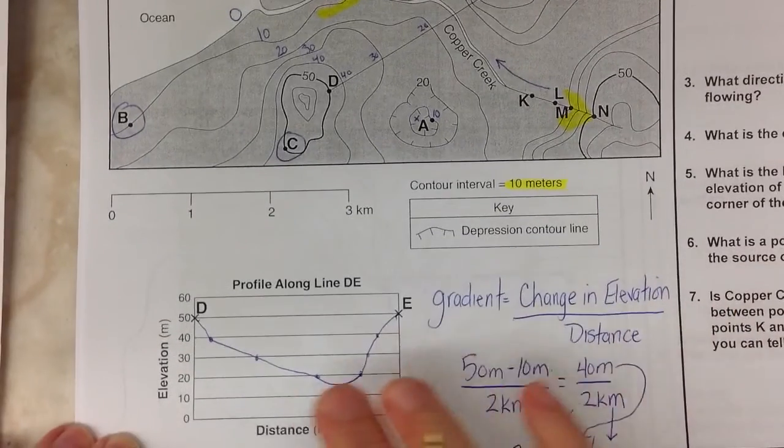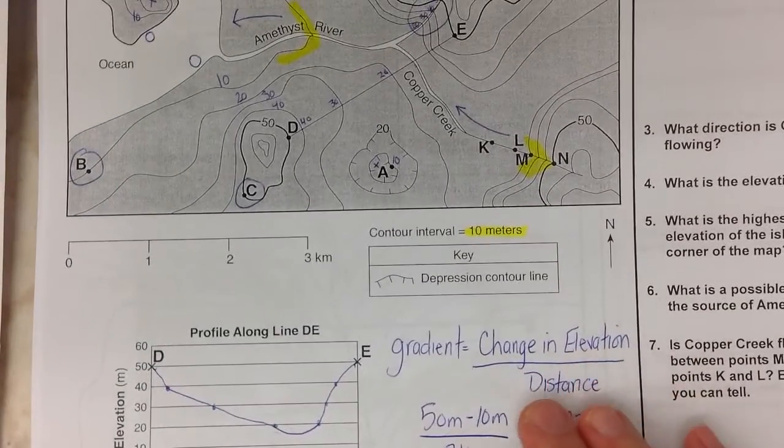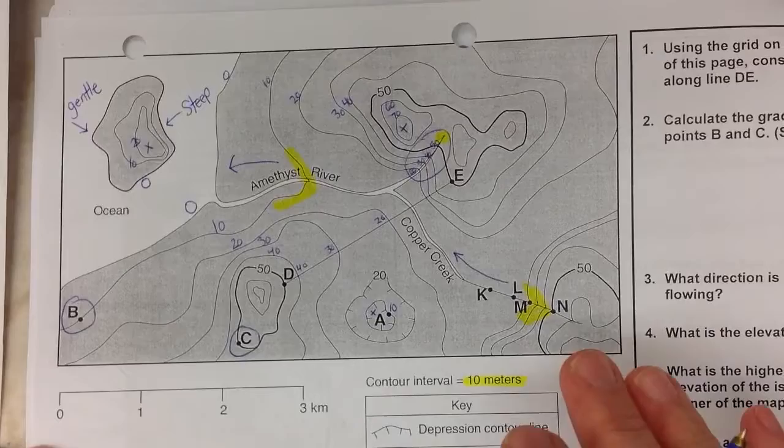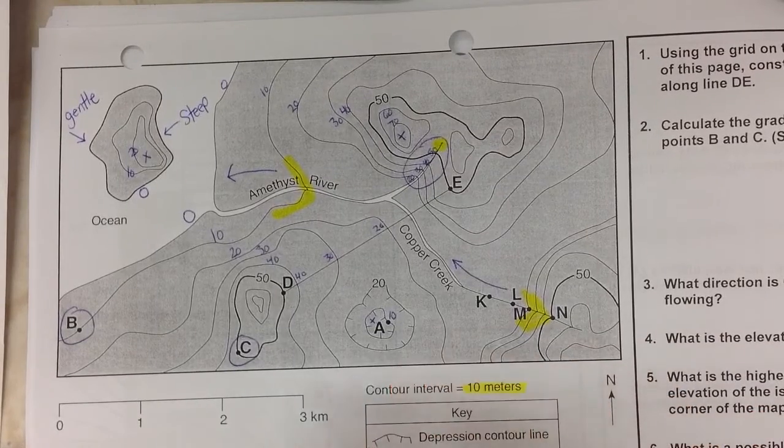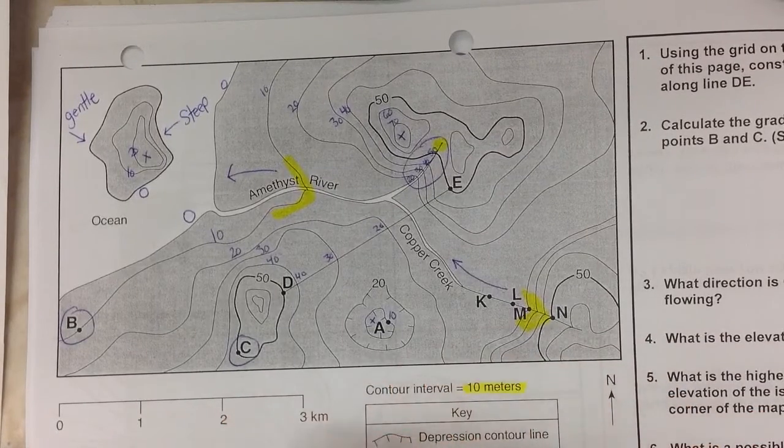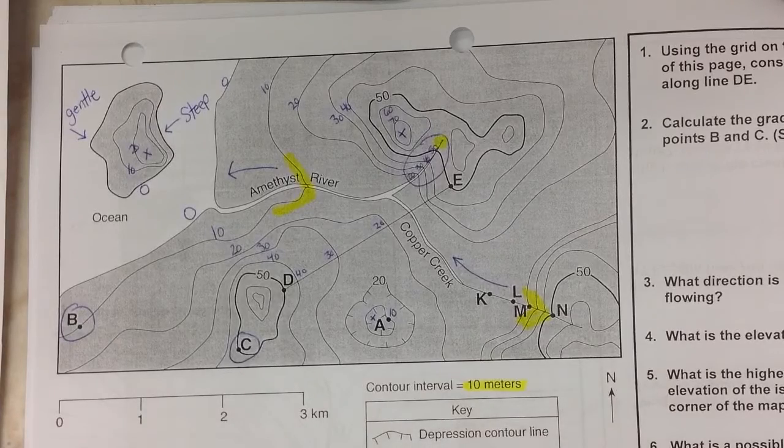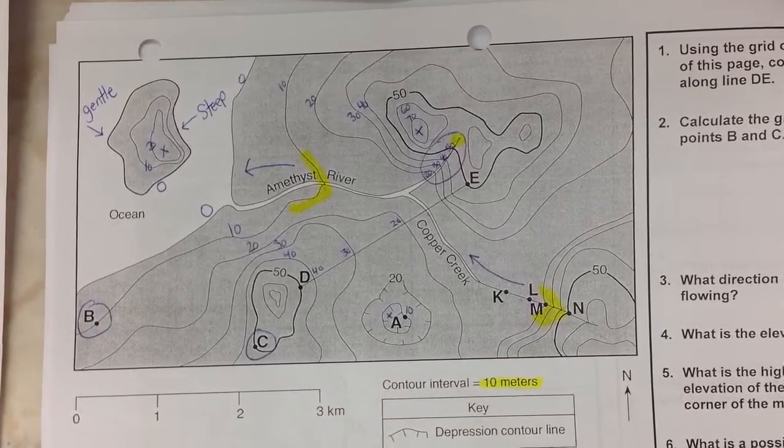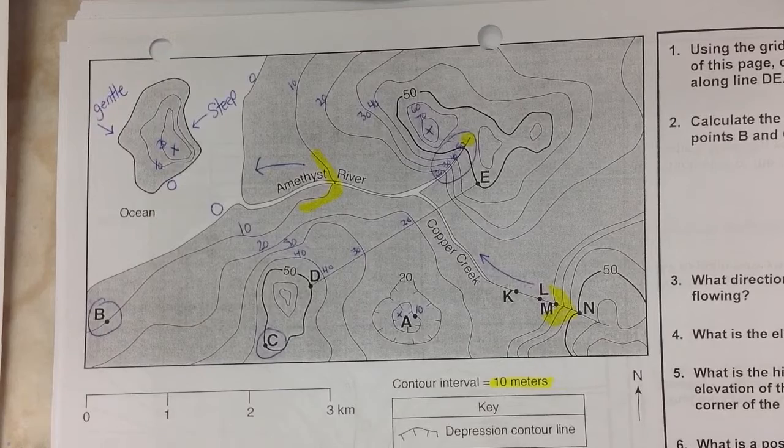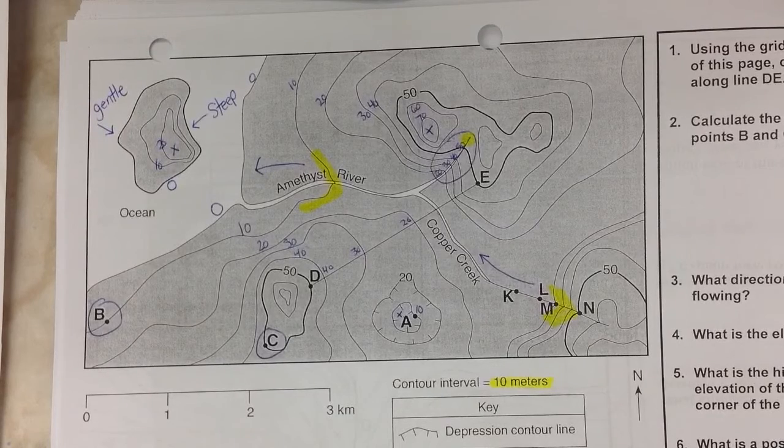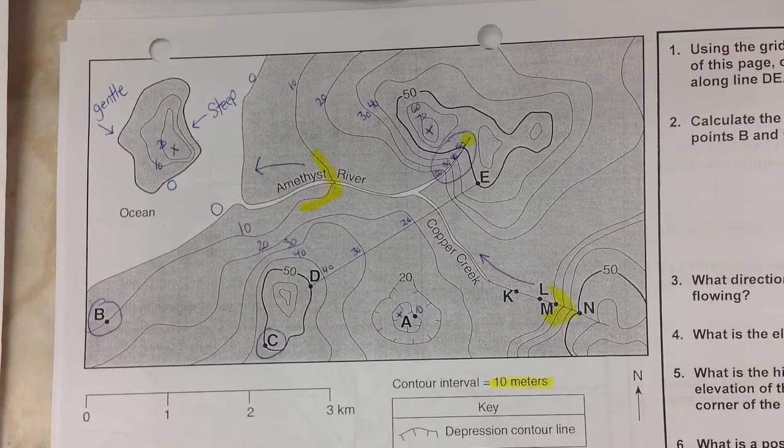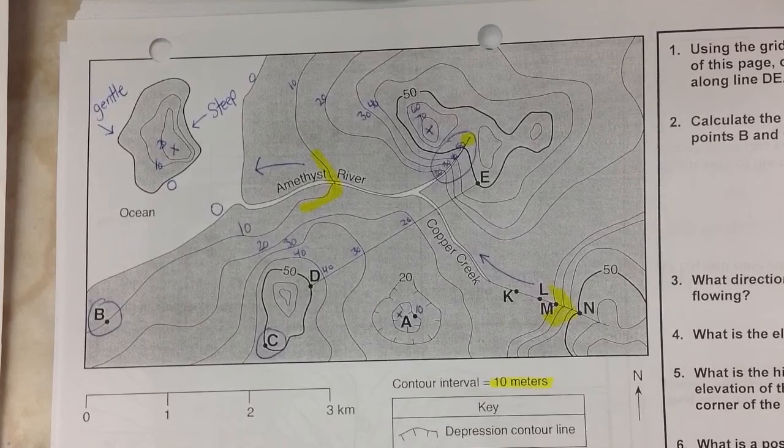So the idea behind this is that we just did a profile. We did gradient. We did your steep slope, gentle slope. We did your hills, depressions, highest possible point, lowest possible point, river direction. So I hope this is going to help you out with your studies. Hopefully, this will kind of answer any questions that you have in terms of topographic maps. Thanks for joining me, and we'll talk to you soon.